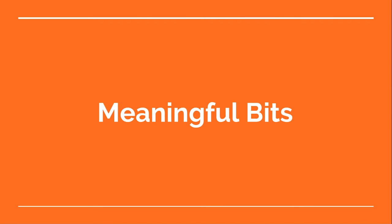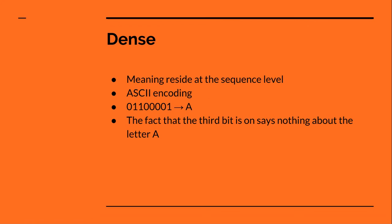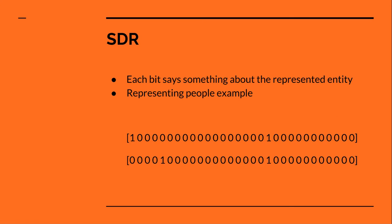Now let's look at the fact that every bit in a sparse distributed representation is meaningful. If we compare this to dense representations like ASCII encoding or integer representations, the information you get out of a sequence of bits is only meaningful if you look at the whole sequence. You can't go inside that sequence and say this bit is on, that must mean something about the letter A. That doesn't exist in dense representations, but in sparse distributed representations it's quite different.